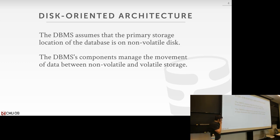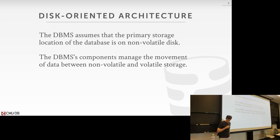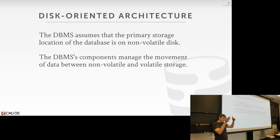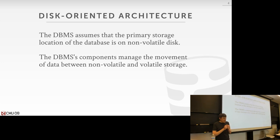So last class, we started talking about how we would want to design a disk-oriented database system. A disk-oriented system is one where the system assumes that the primary storage location of the database is on disk. We spent time talking about how to organize the database at different levels: within files, within pages, and then within those pages within tuples. We want to support databases that are larger than the amount of memory available on a single machine. For now, we can ignore distributed approaches.